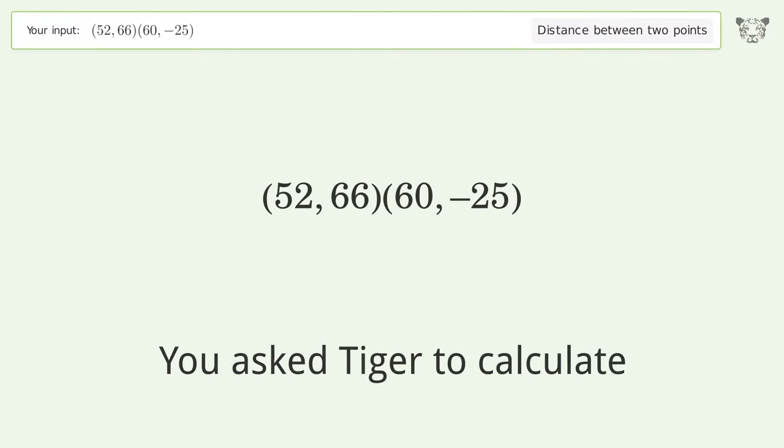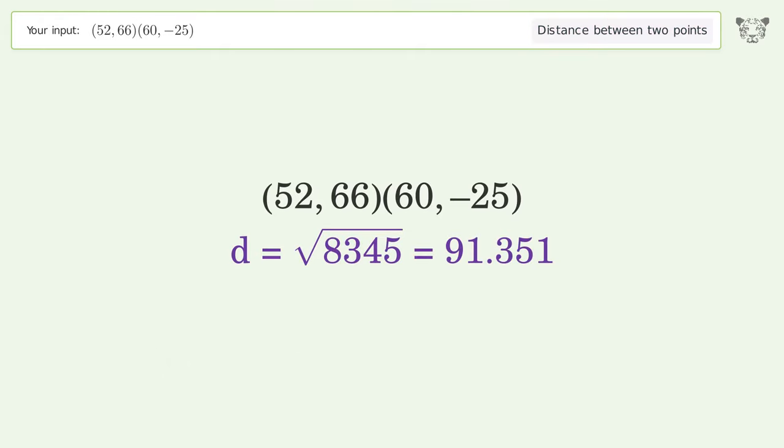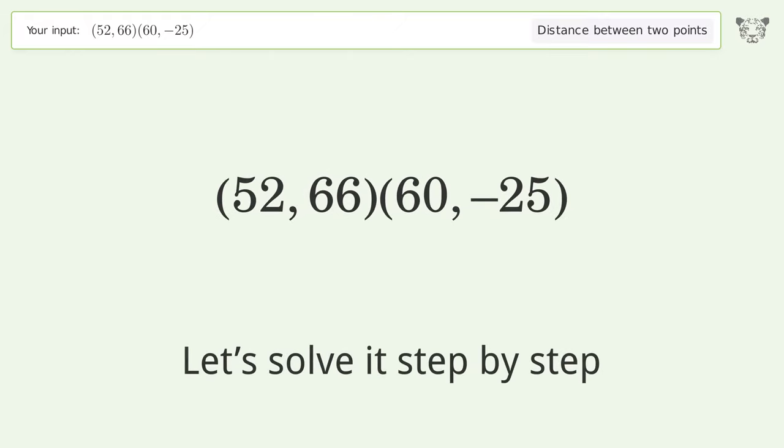You asked Tiger to calculate the distance between two points. The distance between the two points is the square root of 8,345 or 91.351. Let's solve it step by step.